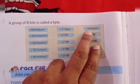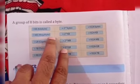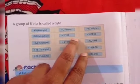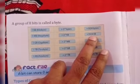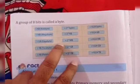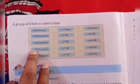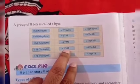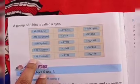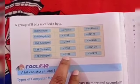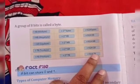1 KB (kilobyte) equals 2 to the power 10 bytes, that is 1024 bytes. 1 MB (megabyte) equals 2 to the power 10 KB, that is 1024 kilobytes. 1 GB (gigabyte) equals 2 to the power 10 MB, that is 1024 megabytes. 1 TB (terabyte) equals 2 to the power 10 GB, that is 1024 gigabytes. 1 petabyte equals 2 to the power 10 terabytes, that is 1024 terabytes.